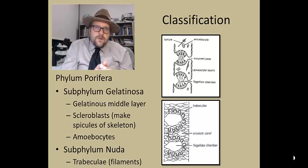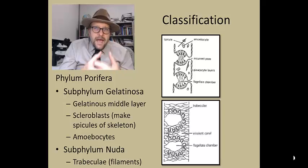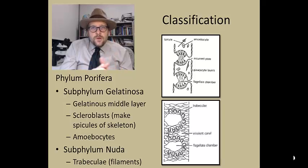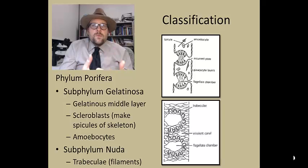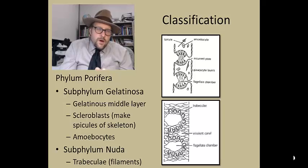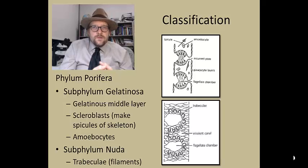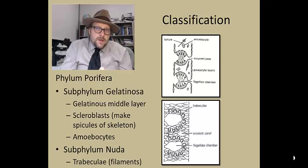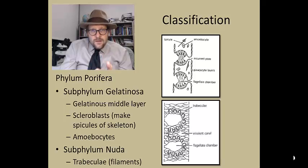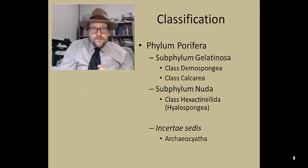The other subphylum is the Nuda, which lacks a middle gooey layer and instead has a framework of filaments called trabeculae to hold the sponge together. Many of these can be composed of silica.